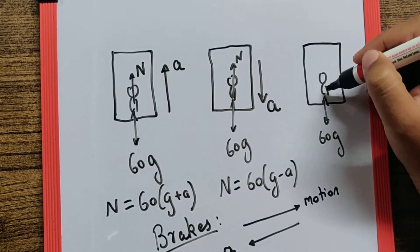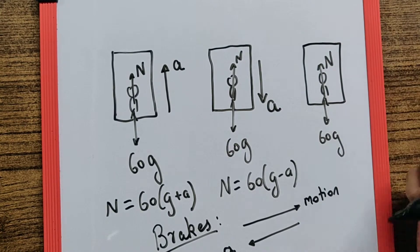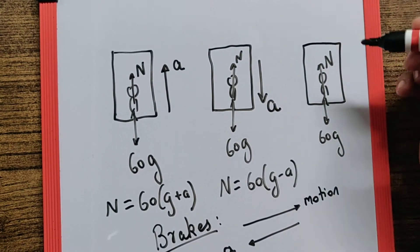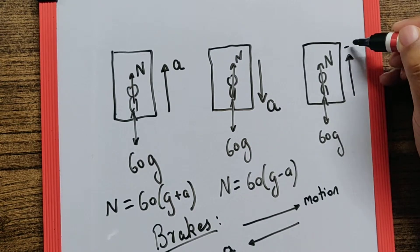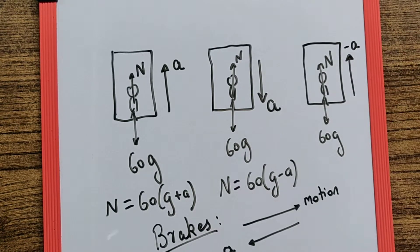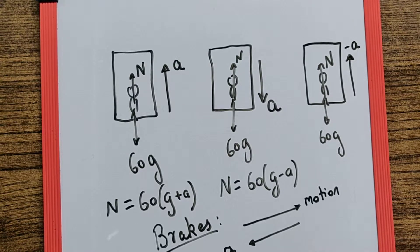For example, if the lift is moving upward, let's assume this is 60G, this is normal reaction. Let's assume the lift is moving upward and it is slowing down, so there is an acceleration which is actually acting as a retardation, which means the lift is coming down to a halt.